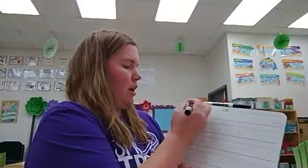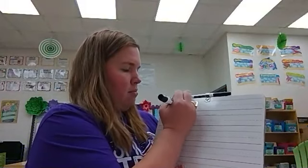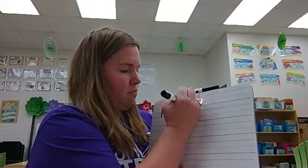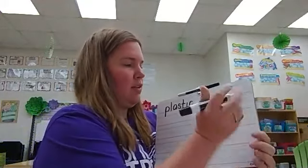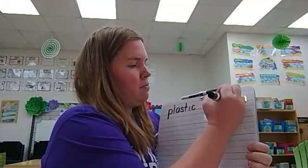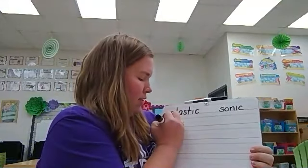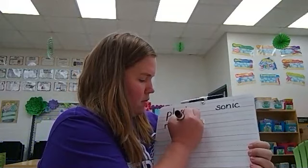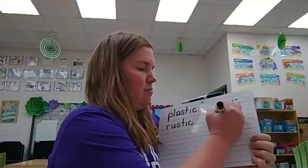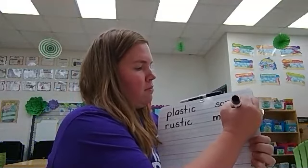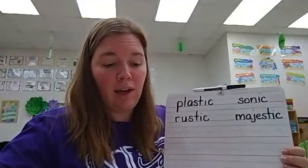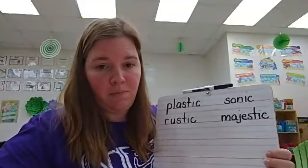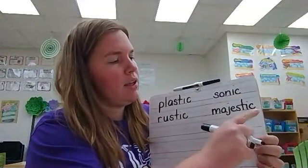Today, we are learning one more way to spell k at the end of the word. On my board, I am going to spell some different words for you. The first word is plastic. I am going to write the word rustic, sonic, and majestic.